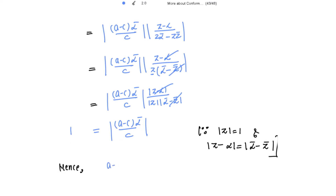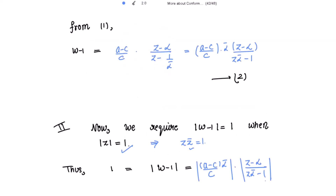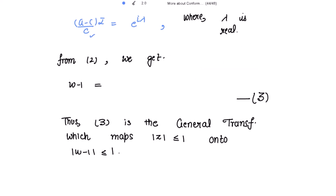Therefore we may write (a - c)ᾱ/c = e^(iλ) where λ is real. Substituting this back into equation 2, we get w - 1 = e^(iλ) · (z - α) / (zᾱ - 1). Please mark this as equation 3. This is the general transformation which maps |z| ≤ 1 onto |w - 1| ≤ 1. Now we apply the given conditions to get the particular case.